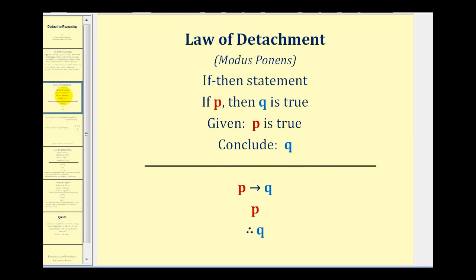This type of reasoning is also called law of detachment or modus ponens, which states that if we have an if-then statement, if P then Q, which we know to be true, if we're given P is true, we can conclude Q. Using notation it would look like this: if P then Q is true, given P therefore Q. This symbol here means therefore.